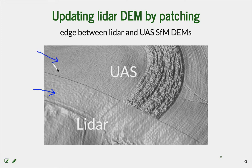It is clear that when you are fusing these two datasets, you are trying to preserve as much detail in the UAS data as possible. So how can we create a fusion of these two datasets without the edge?